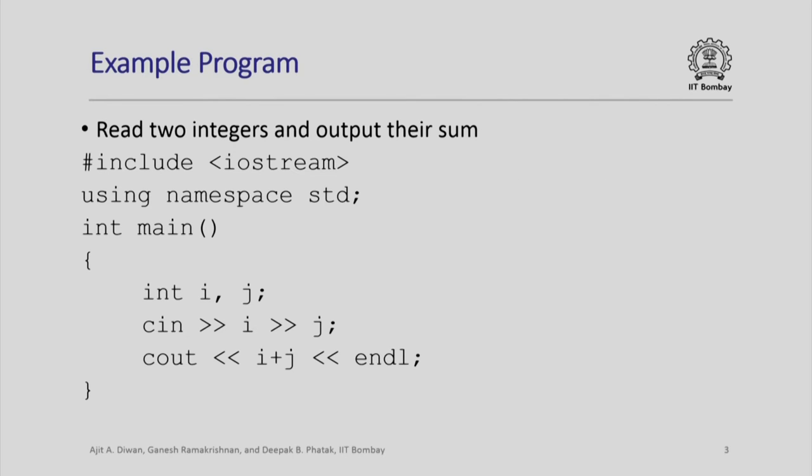Let us look at a simple example program in C++. This just reads two integers and outputs their sum. If you see the declarations, we have declared two integer variables i and j. We read in their values and we output the sum of those two values. We need to include some library files in order to read in and output these integers.